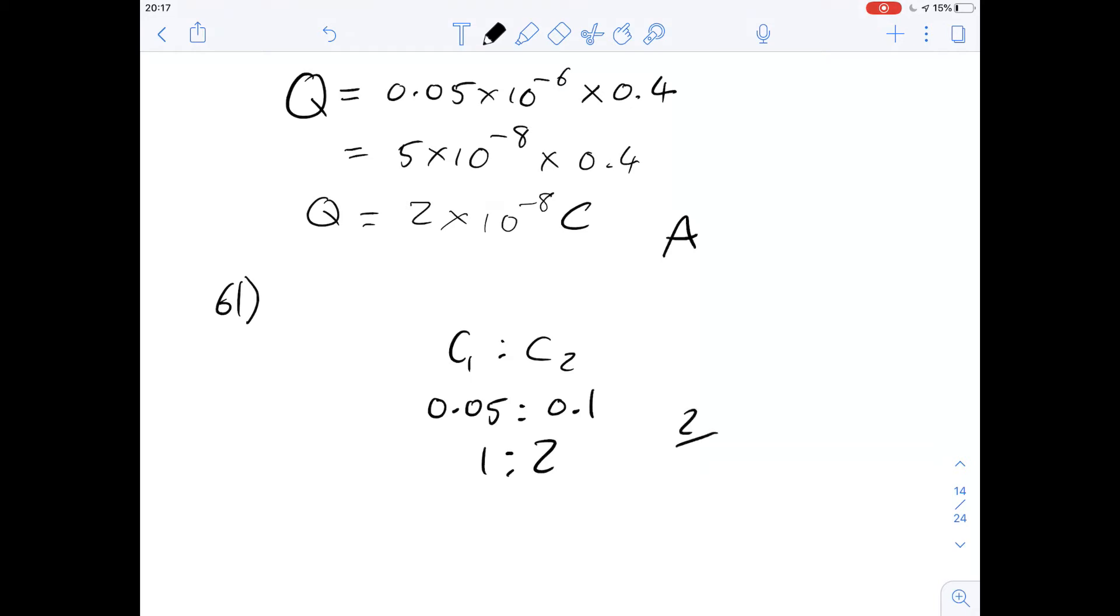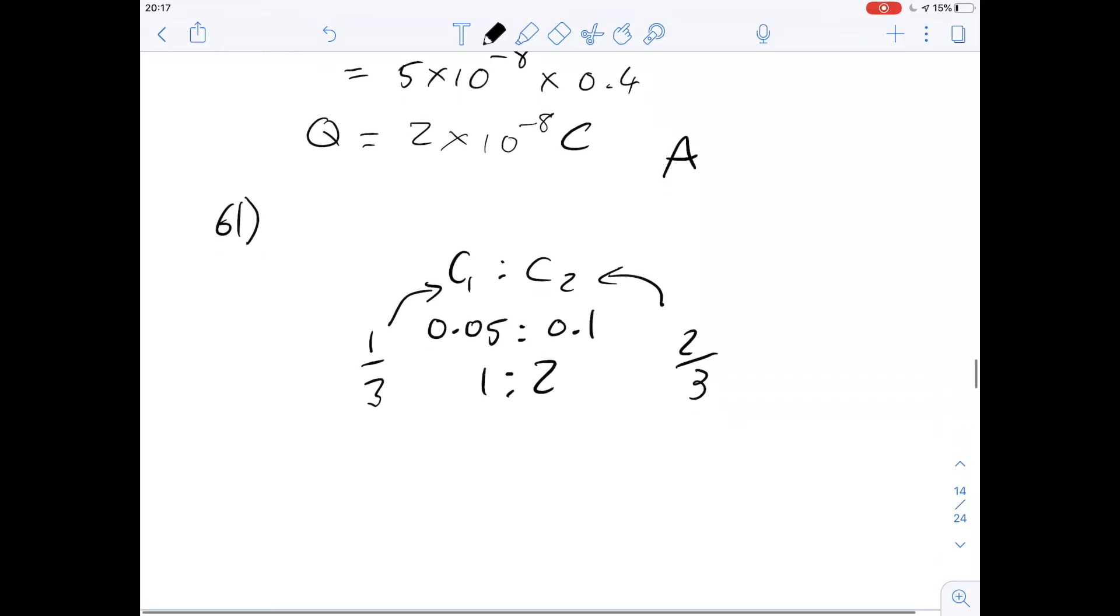So we have a 1 to 2 ratio, meaning that two thirds of the electric charge will go to C2 and one third will stay at C1. So if we put this in terms of percentages, we'd have 67% roughly going towards C2 and 33% roughly staying at C1. That means this is closest to 70%. So the answer for this one is going to be C.